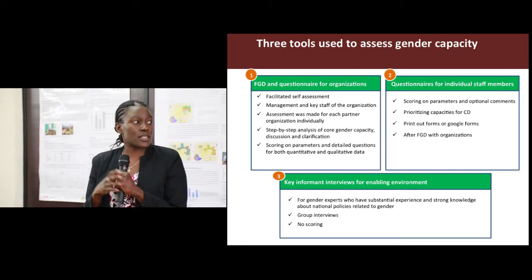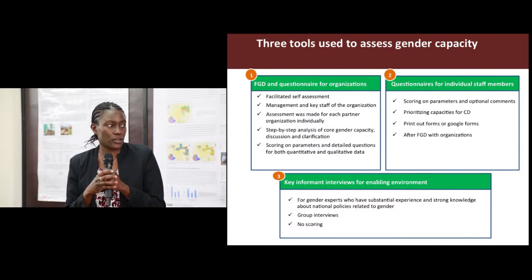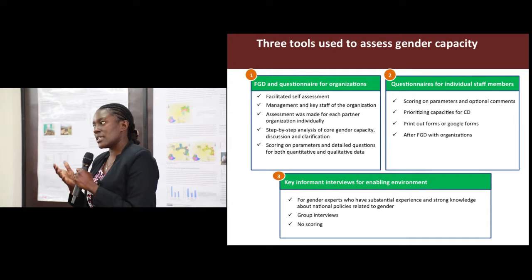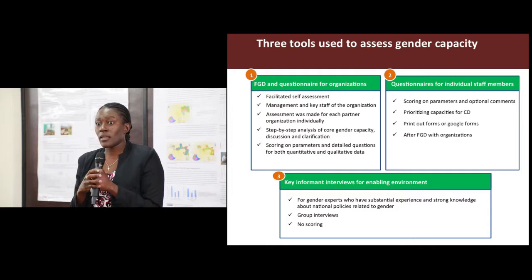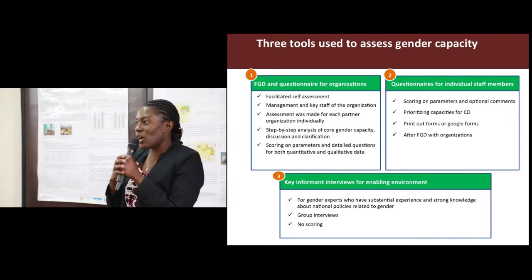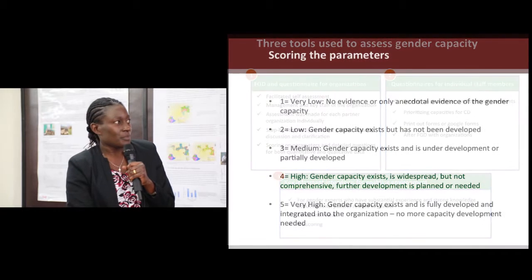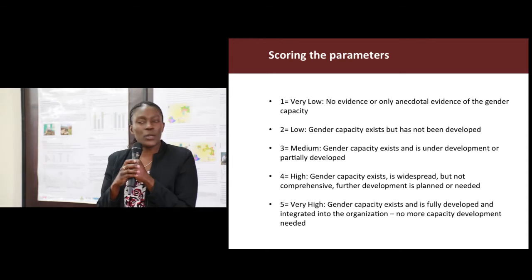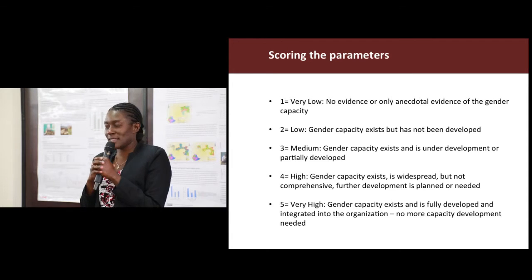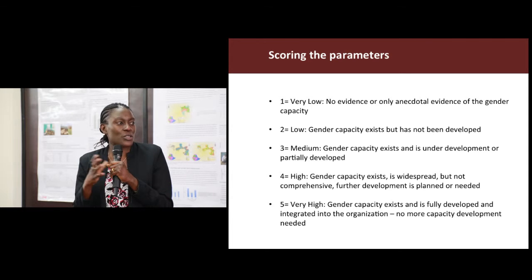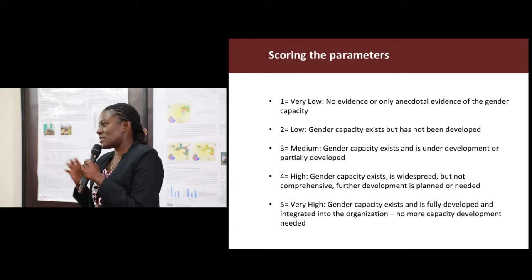We also have key informant interviews, which give us information on a broader perspective at national level. These key informants are strategically selected because you want people who give you thorough information about the enabling environment — the policies in place — and how these are helping different organisations or staff to integrate gender in their work. When assessing capacities, there is a scale of one to five — one being the least and five being the highest. When you score five, it means your gender capacity is fully developed and no further capacity development is actually needed.